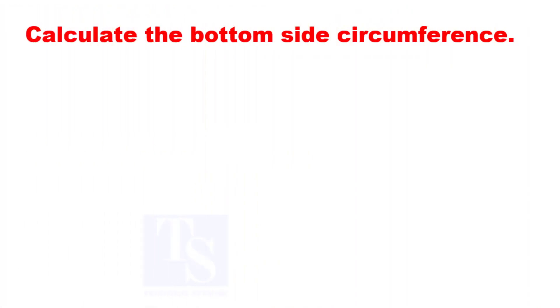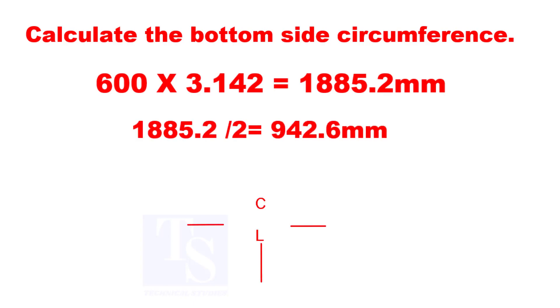Let us calculate the bottom side mean diameter circumference. Divide the circumference by 2, and mark the length on both sides. If required, you can mark the full length to one side.